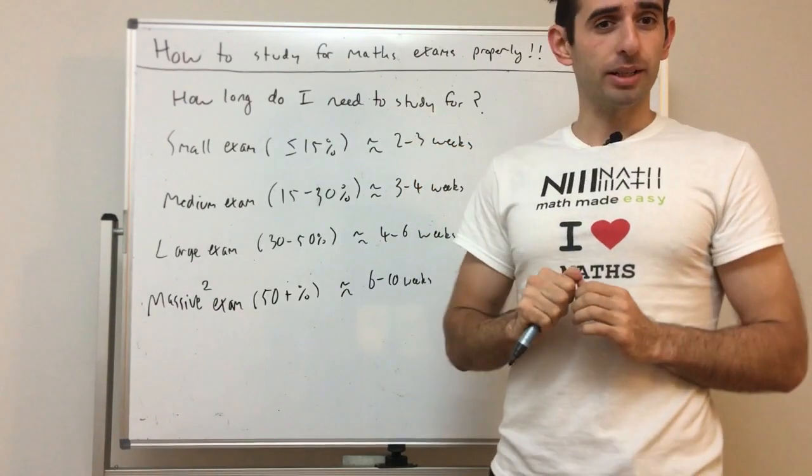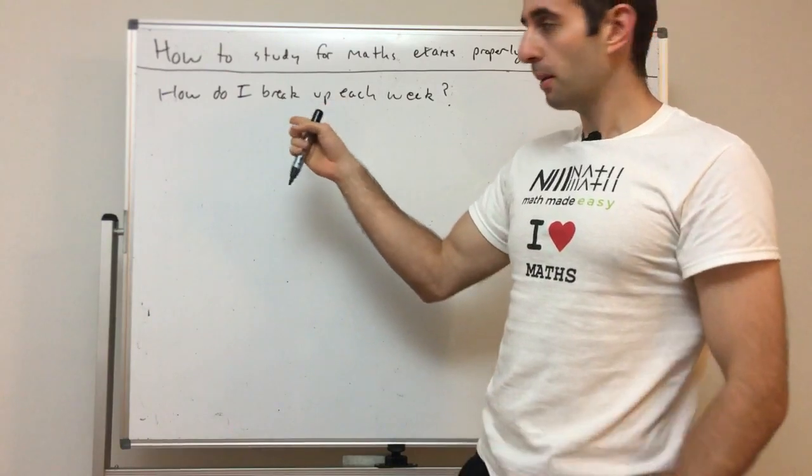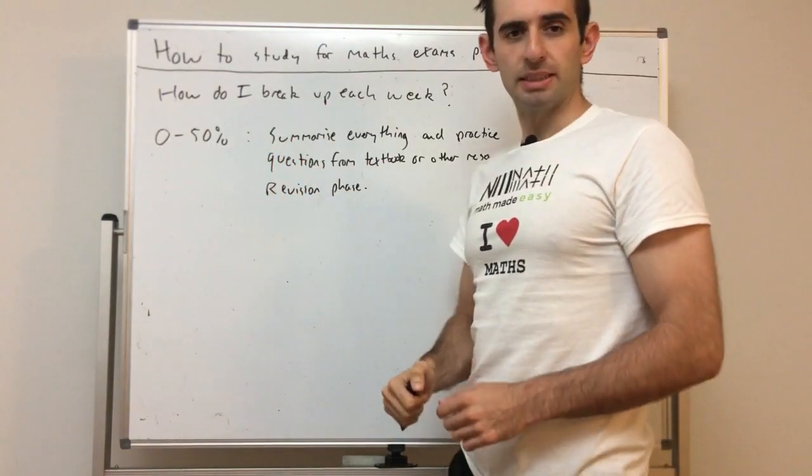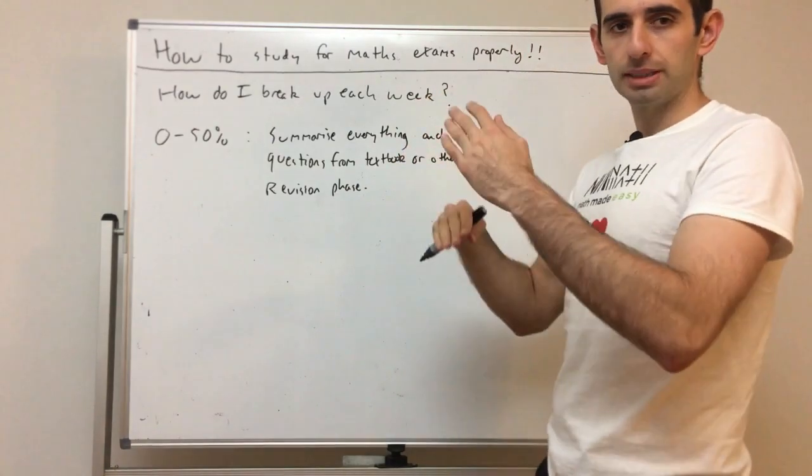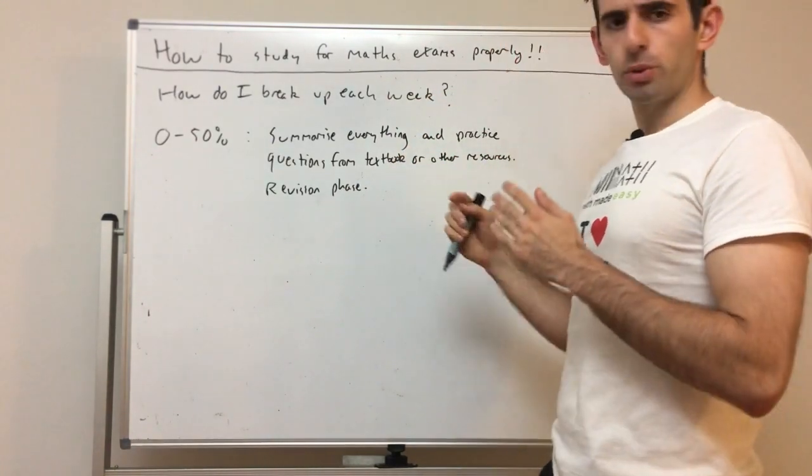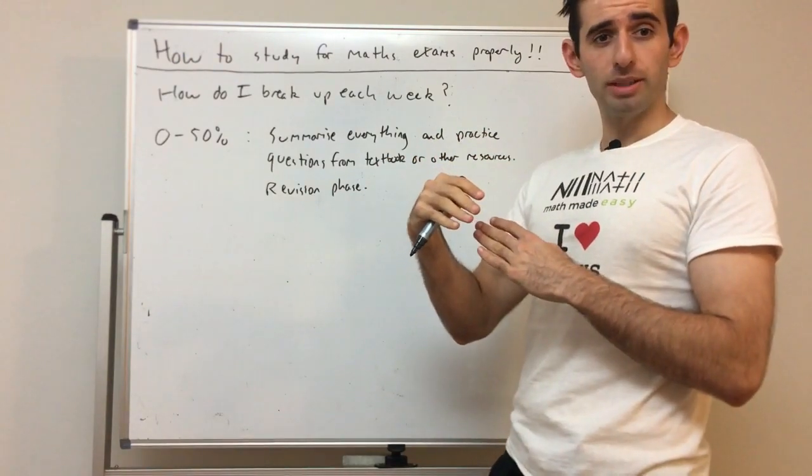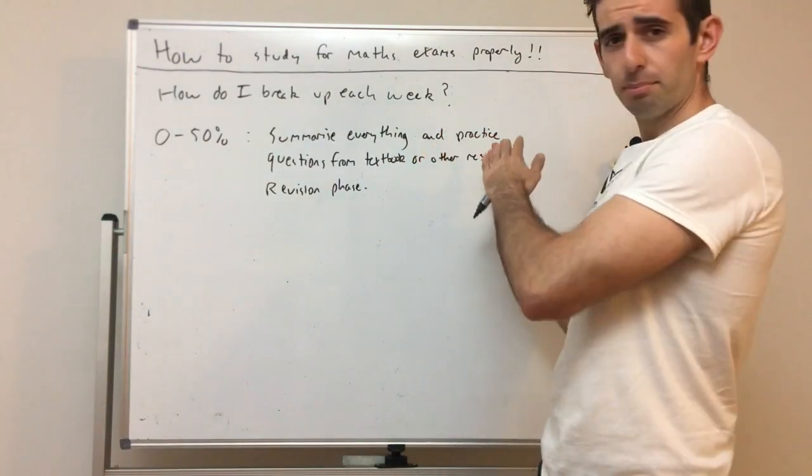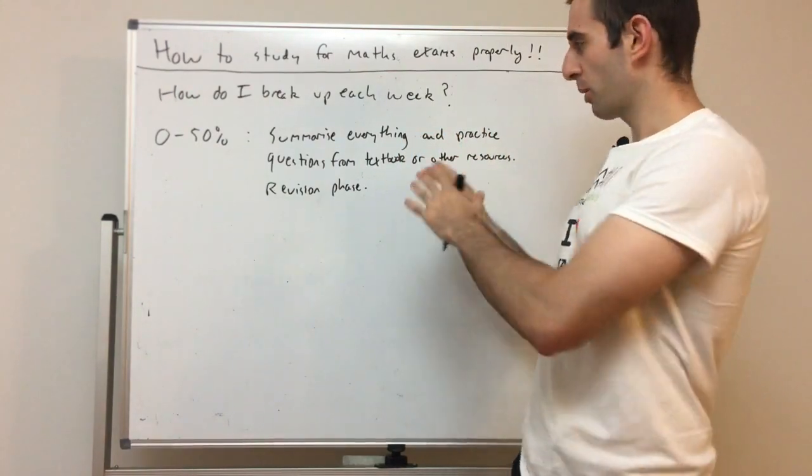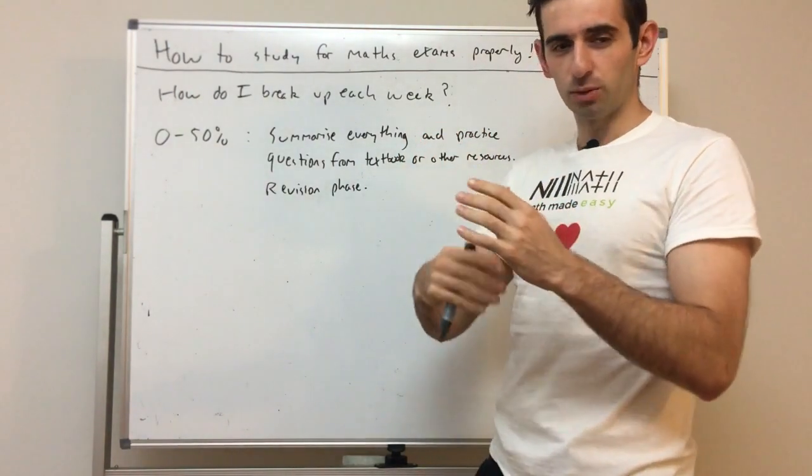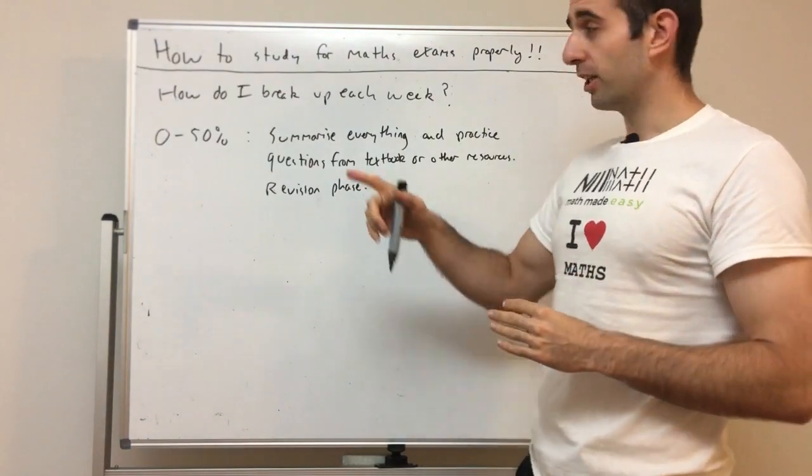How do we break up each week? The first 50% of the study timetable - of the four weeks, six weeks, whatever we're doing - you want to summarize all your formulas for maths and then practice lots of questions from your textbook or other resources. This is the revision phase. The first half is revise everything. I'll probably do separate videos on how to summarize for maths properly and practicing questions from different textbooks.